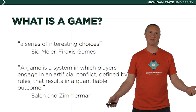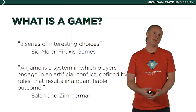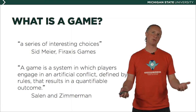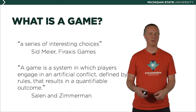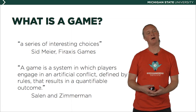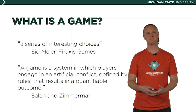Another possible definition is: a game is a system in which players engage in an artificial conflict designed by rules that result in a quantifiable outcome. That comes from the book The Rules of Play by Salen and Zimmerman. Those are useful for us — they help us think about what we're doing when we design games.